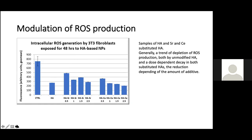We examined reactive oxygen species on L929 fibroblasts using hydroxyapatite and strontium- and cerium-substituted hydroxyapatite. We observed a dose-dependent decay in reactive oxygen species for hydroxyapatite. Somewhat surprisingly, unsubstituted hydroxyapatite more strongly affected the production of reactive oxygen species than the substituted variants.